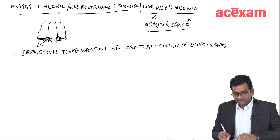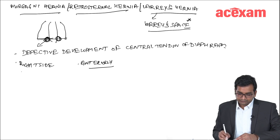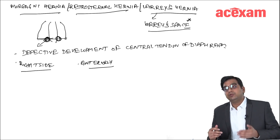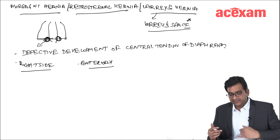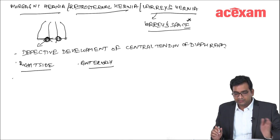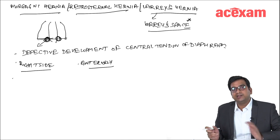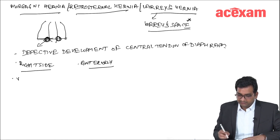Morgagni hernia is more common on the right side and anteriorly. Whereas in the Bochdalek hernia, it is more common on the left side and posterolateral. Among Bochdalek hernia and Morgagni hernia, the Bochdalek hernia is more common. The vessel that passes through Larry's space is the superior epigastric vessel.